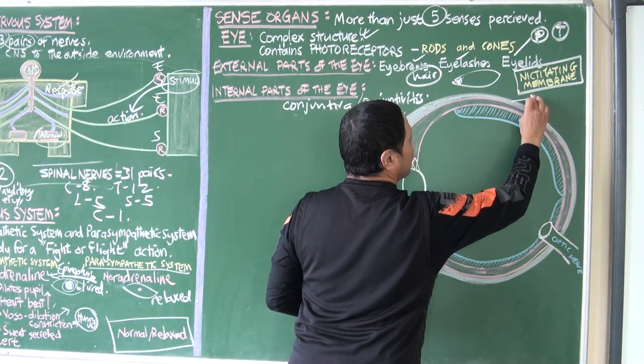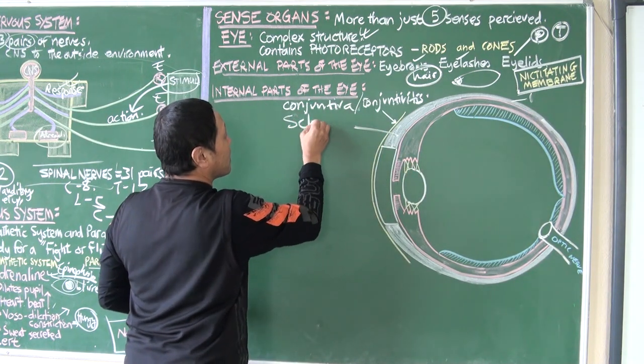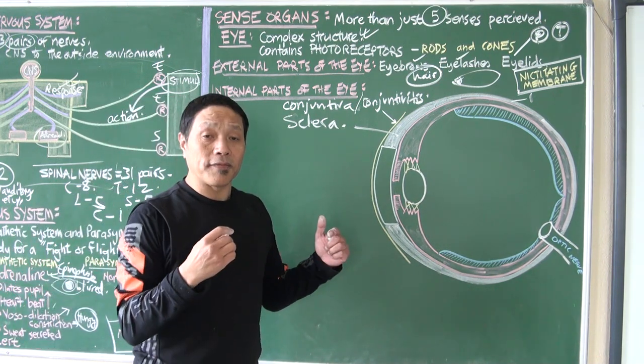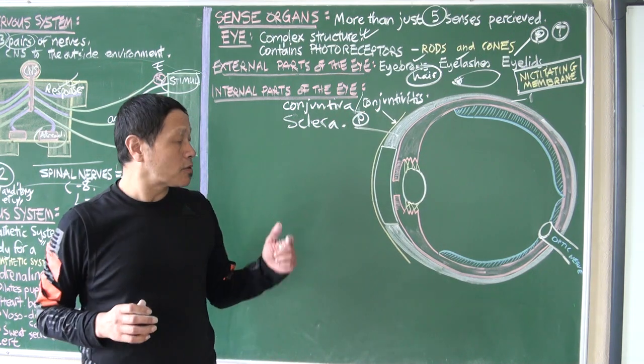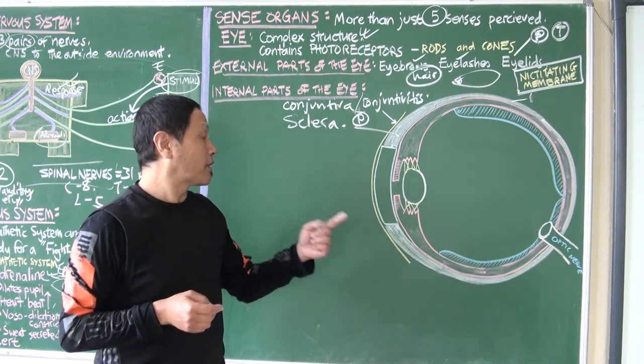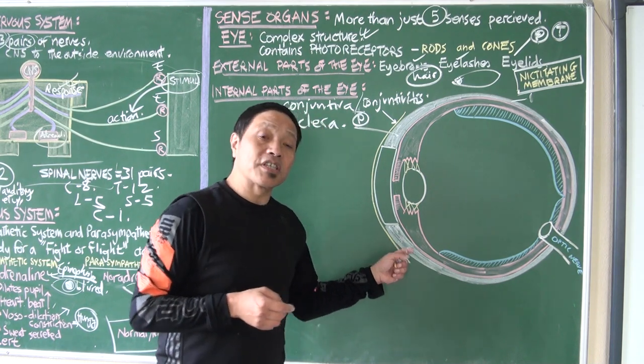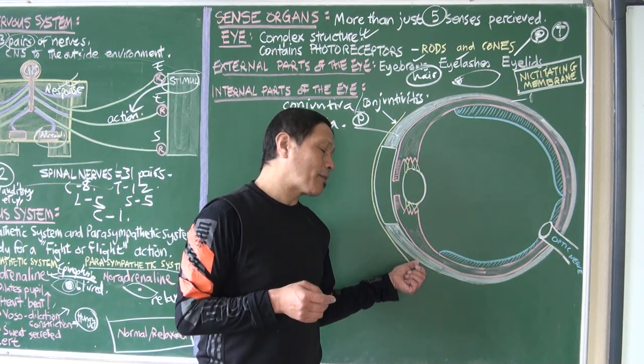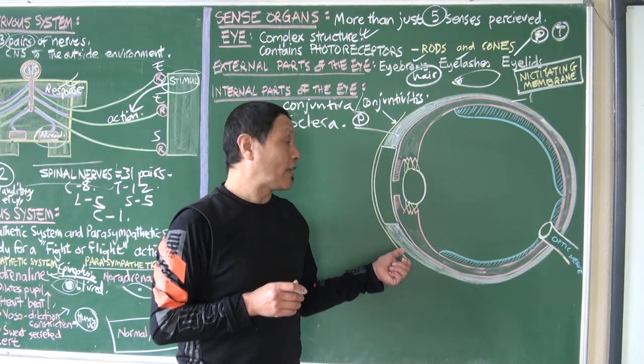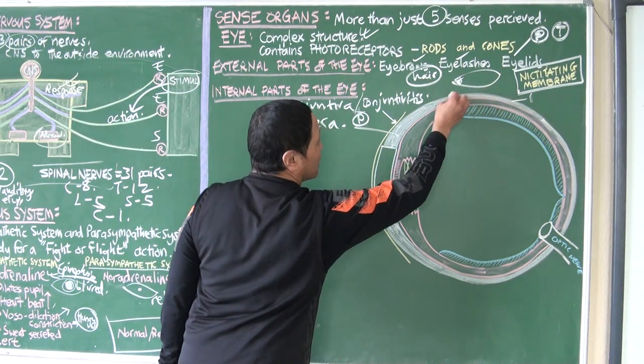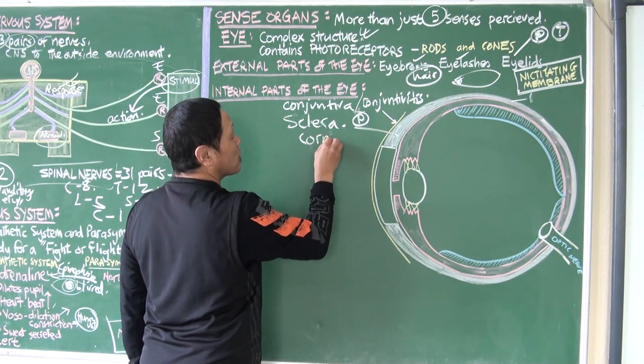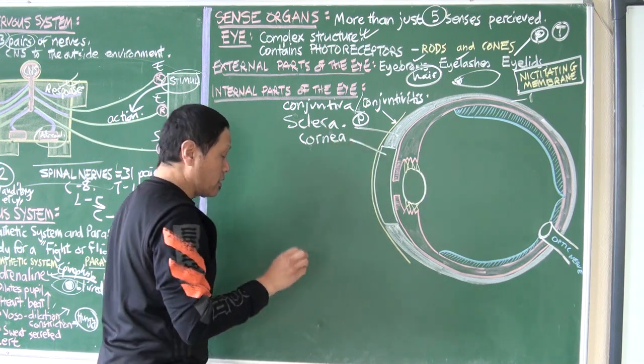The first layer is called sclera. It's fibrous and tough. It provides protection - its main job is to provide protection. This is the part where you see your eye is white, that part. It also perceives pain. If you touch the white part with a small pencil, you realize it's very painful. On the front part, the sclera modifies itself to form a fixed lens known as cornea.